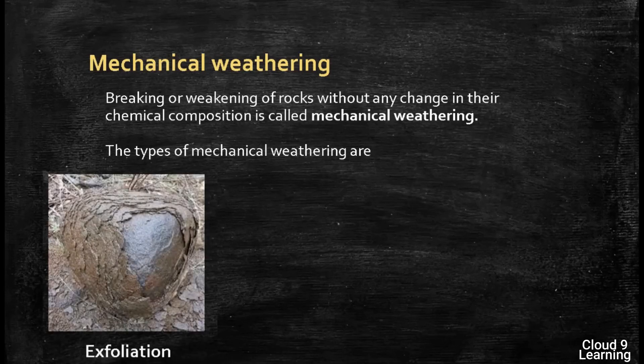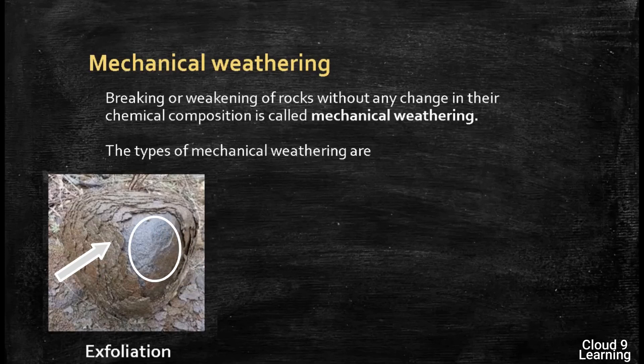This picture shows exfoliation of rocks. It takes place because of change in temperature. In exfoliation, the exposed part of the rock heats more while the inner part is comparatively cooler. As a result, the outer layers of the rock fall apart from the main rock. This is called exfoliation, as shown in this picture where the outer layer is exfoliated.